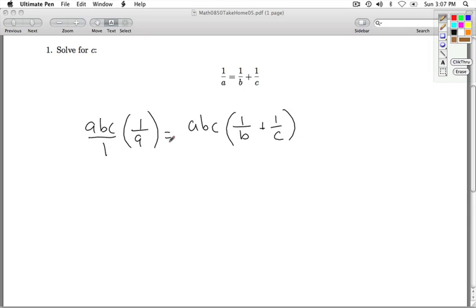On the left hand side I can think of this as A, B, C over 1. I can cancel the 1 out. I'm left with B, C.